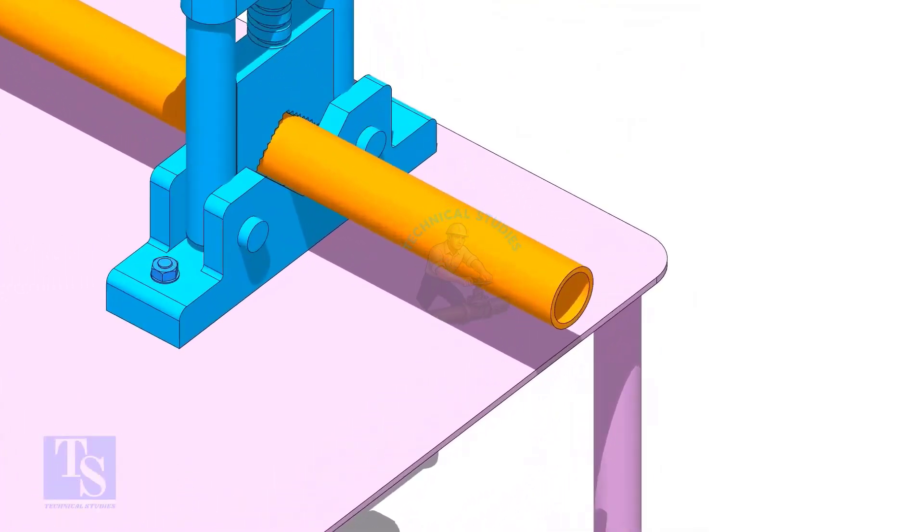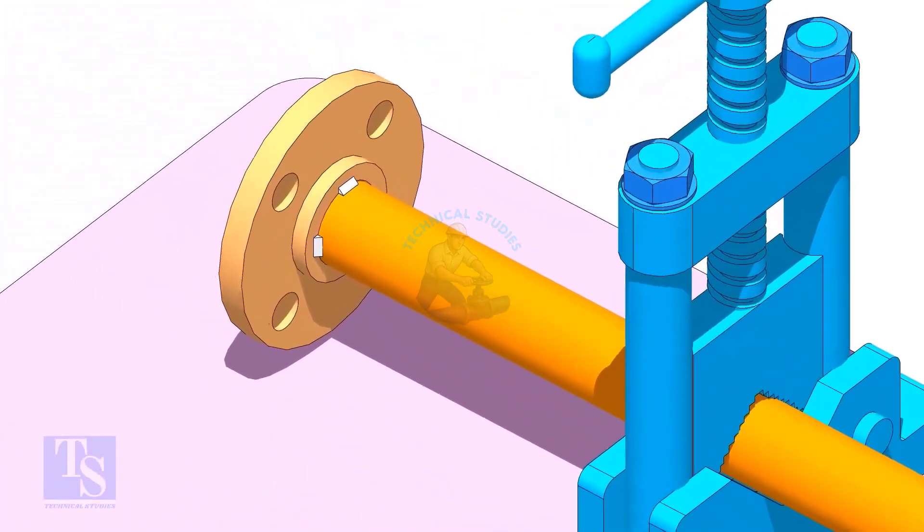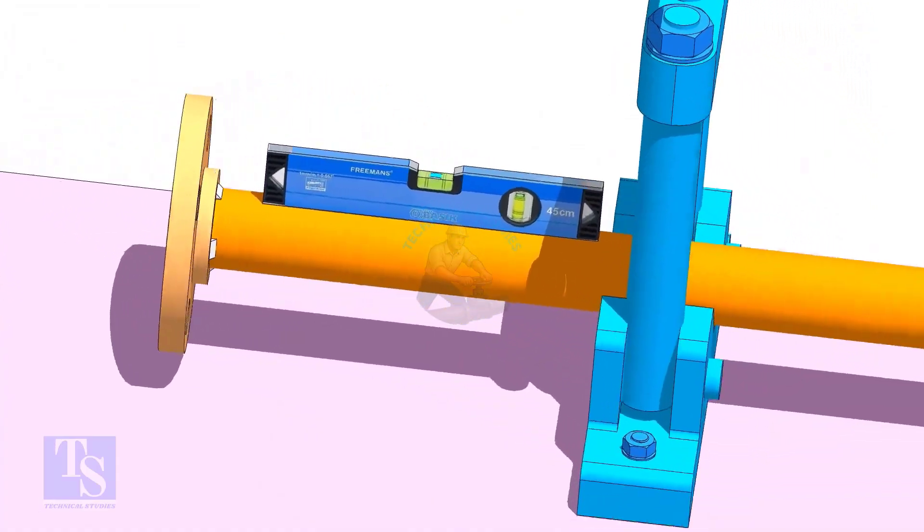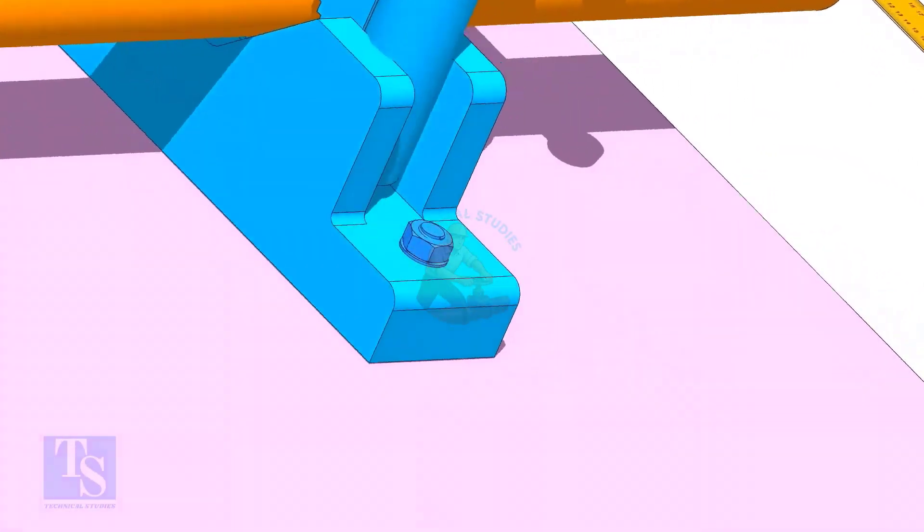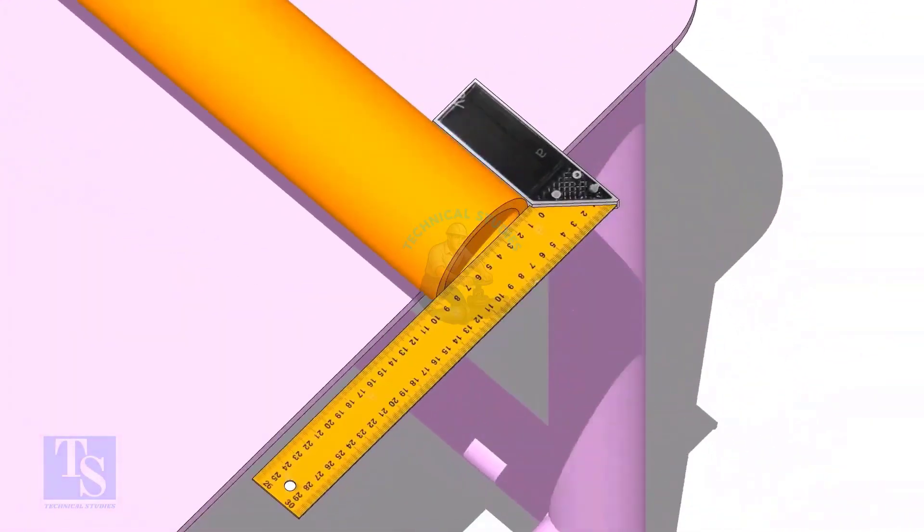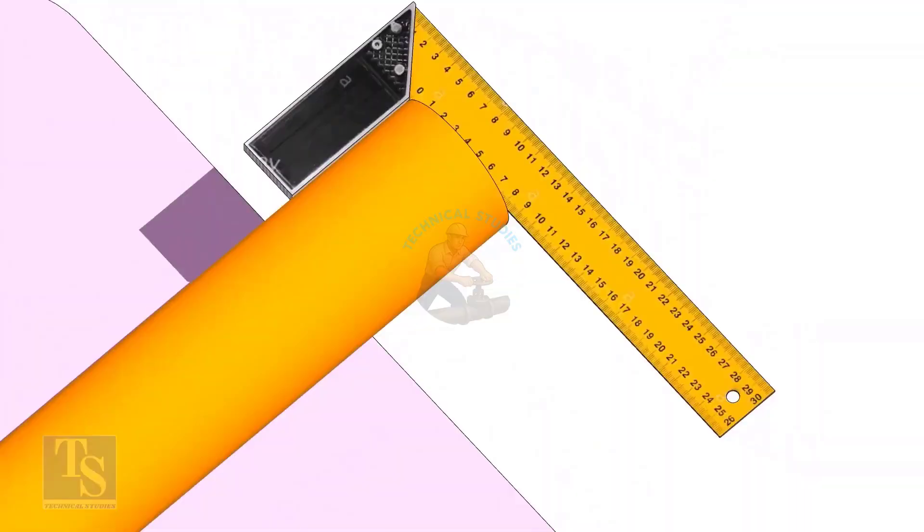Level the pipe and the flange. Make the pipe end square. Don't fit up a bevel end pipe in a socket weld fitting.